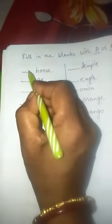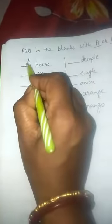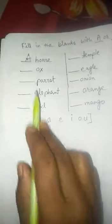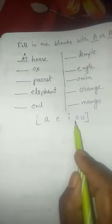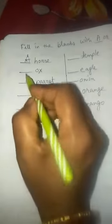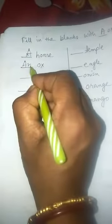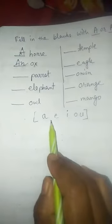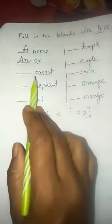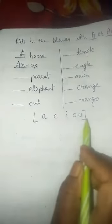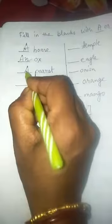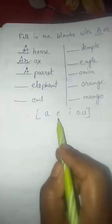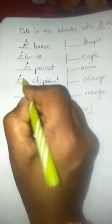Horse: h is consonant, so here we put a. Ox: o is vowel, see o is vowel, so we put here an. Parrot: p is consonant, p is not in the vowels, so we put here a.